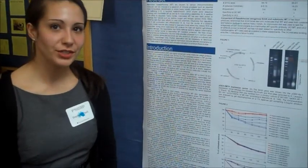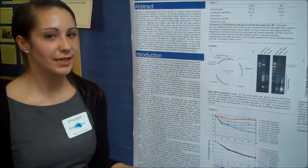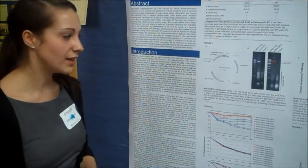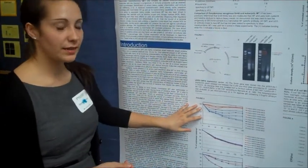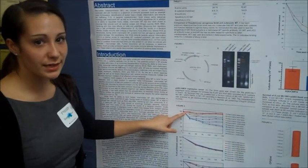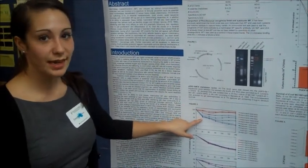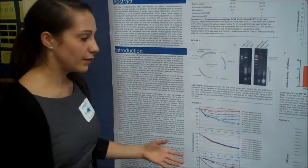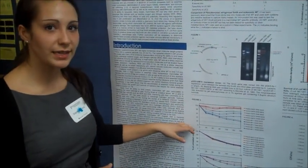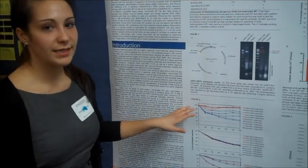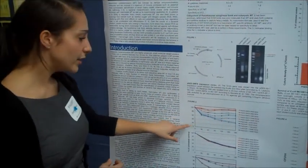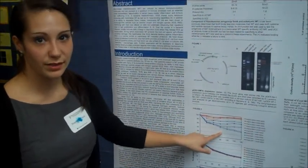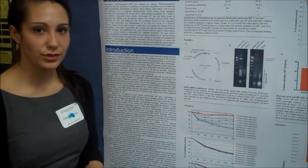We treated both strains — those expressing SMTA and those not expressing SMTA — with hydrogen peroxide as a source of oxidative stress. The red lines indicate bacteria that express SMTA, and the blue lines are bacteria that do not. The different lines represent different concentrations of hydrogen peroxide. At every concentration, the SMTA-expressing bacteria survived significantly better, and we can conclude that this is due to the presence of SMTA.